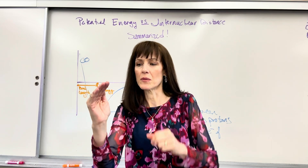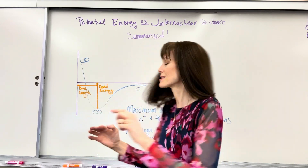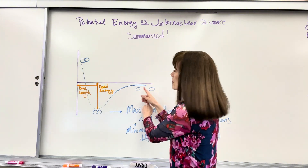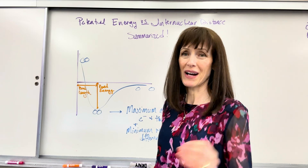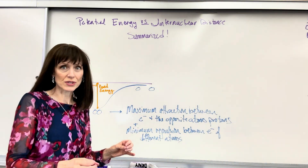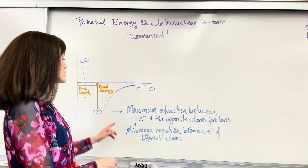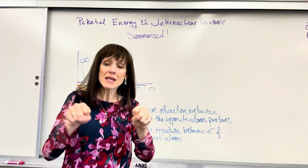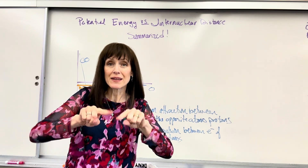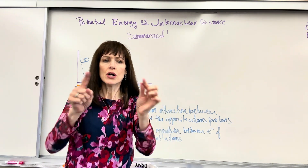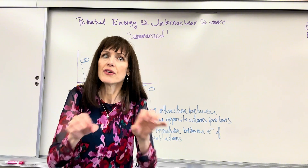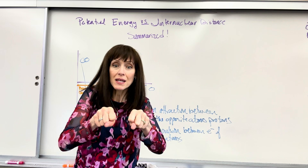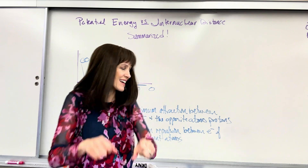The electrons in one atom are attracted to the opposite atom's protons. These two atoms begin to attract — the electrons attracting to the opposite proton. We hit a beautiful sweet spot. Here's your summary of internuclear distance versus potential energy: there's a maximum attraction between those electrons and the opposite protons with a minimum repulsion between the electrons. As the atoms get closer, those electrons, all negative, can repel each other. We hit this beautiful point where you've got maximum attraction with minimum repulsion right there.